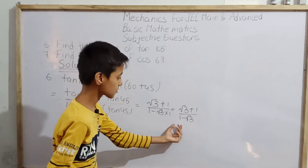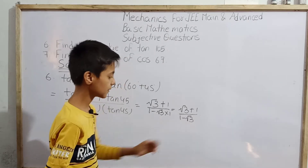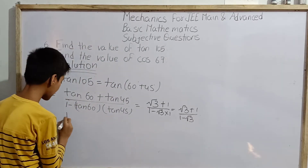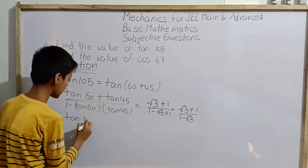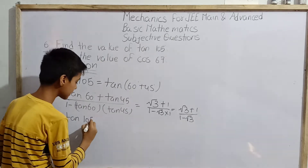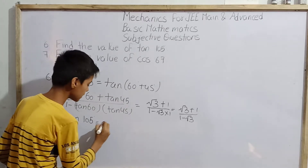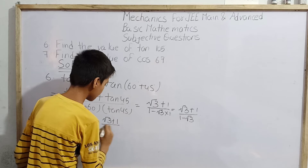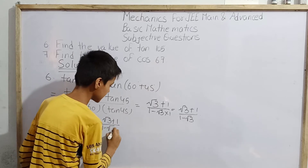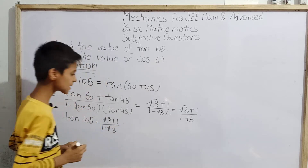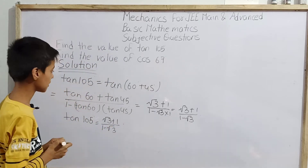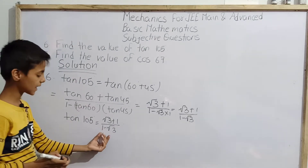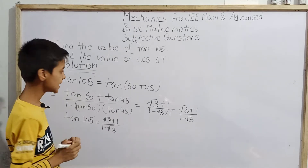So finally, tan 105° equals (root 3 + 1) divided by (1 − root 3). This is the final answer for question 6.